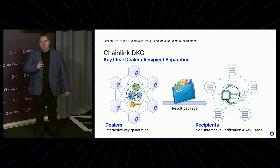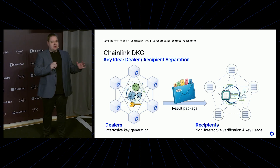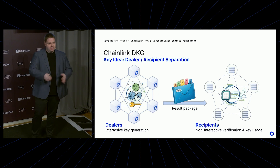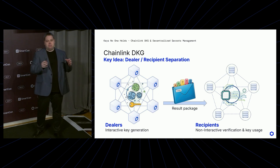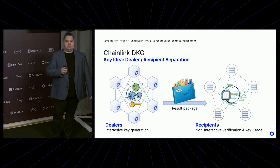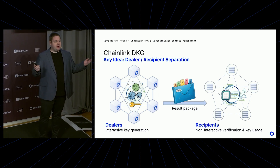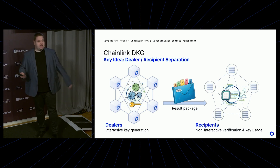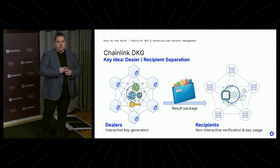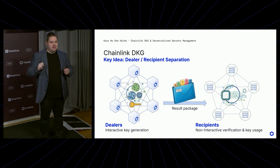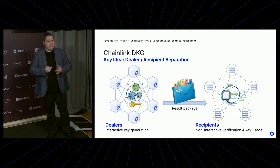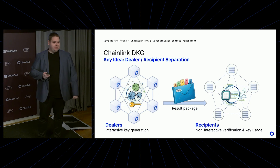A key concept we followed when designing the Chainlink DKG protocol is dealer and recipient separation. A set of nodes generates the keys in the first place, and when this process is finished, they form a result package — the output of the DKG protocol — which is then handed over to the recipients. The dealers and recipients may be the same parties or different parties. This enables a great deal of flexibility: the same approach can be used for recipients to share keys again with another set of recipients, or even to share the key as a backup to offline devices not connected to the system.